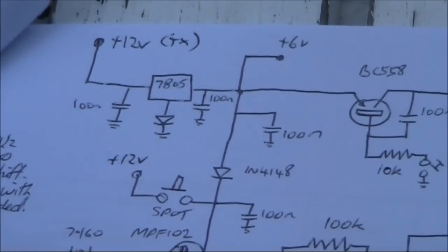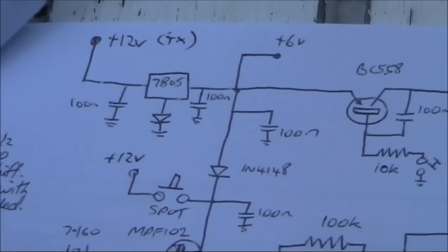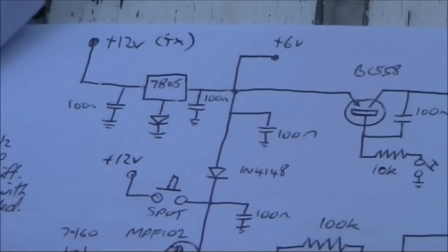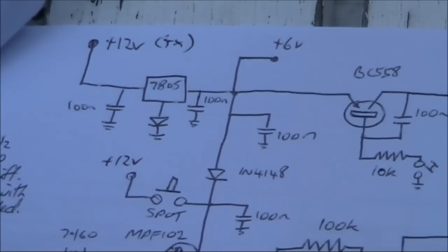Up here is the voltage regulator using a 7805. I've put a diode in the common pin to increase its output voltage up to nearly 6 volts.